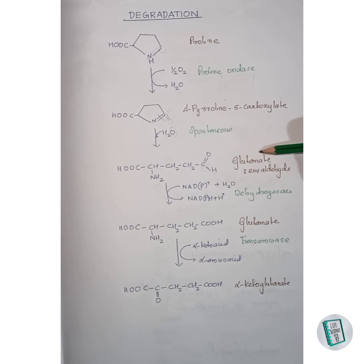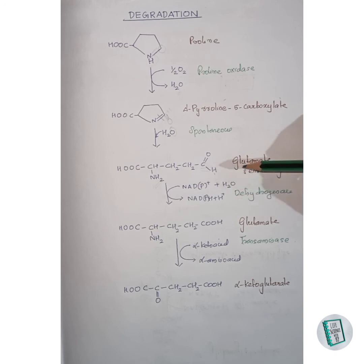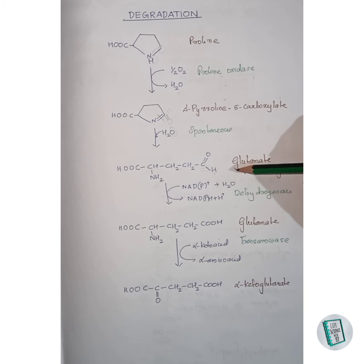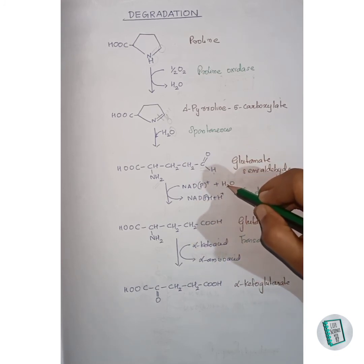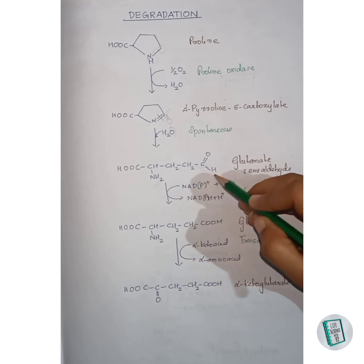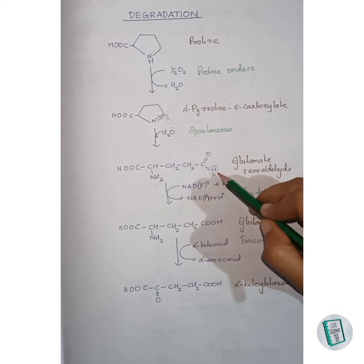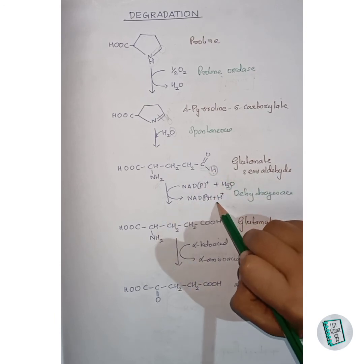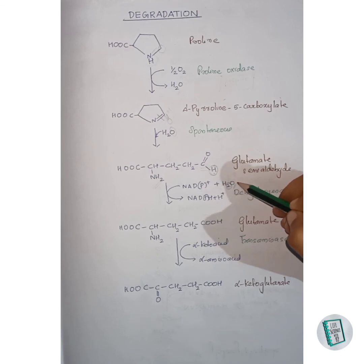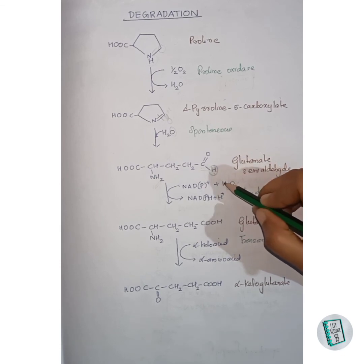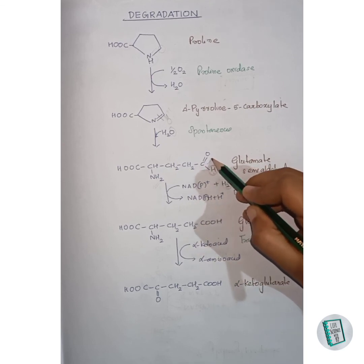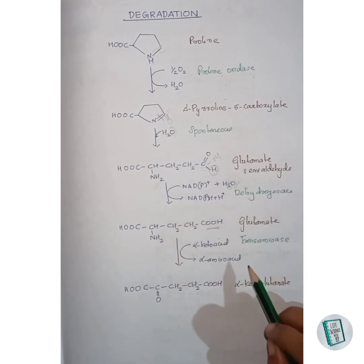In the next step, glutamate semi-aldehyde undergoes dehydrogenation in the presence of a dehydrogenase enzyme to form glutamate. NADP⁺ accepts two hydrogen atoms, and a water molecule is added. One hydrogen from the water molecule and one hydrogen from the semi-aldehyde carbon are both accepted by NADP⁺, which leaves as NADPH₂. The remaining OH from the water molecule combines with the carbon to form a COOH group. Thus glutamate is formed.